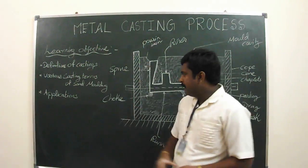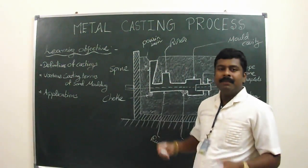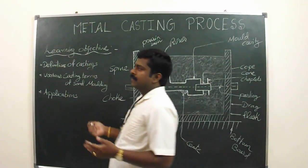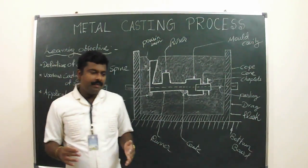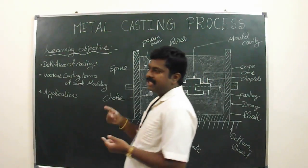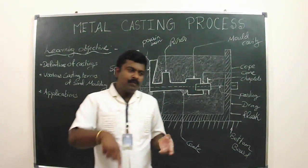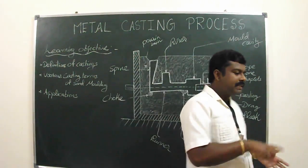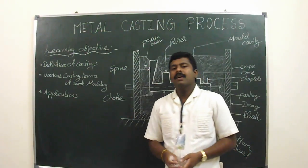Next one is the applications of metal casting. Metal casting process is used for making cylinder heads, piston rings, piston liners, machine tool beds, etc. This is all about this section.